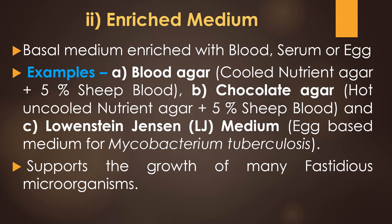The second type is enriched medium — a basal medium enriched with blood, serum, or egg. Examples are blood agar, chocolate agar, and Lowenstein-Jensen medium. Cold nutrient agar plus 5% sheep blood is blood agar; hot uncooled nutrient agar plus 5% sheep blood is chocolate agar. Lowenstein-Jensen medium is an egg-based medium for cultivating Mycobacterium tuberculosis. Enriched media support the growth of fastidious microorganisms that require complex nutrients.